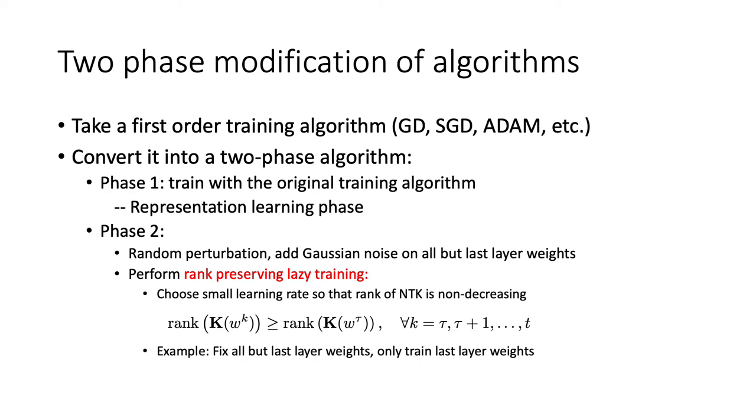Let's talk about the two-phase modification of the algorithm. Take your favorite first-order stochastic training algorithm, or even non-stochastic algorithm like gradient descent. You can convert it into a two-phase algorithm where phase one, you do exactly what you did before. You do representation learning. Let's say originally you have SGD with 100 epochs. Now you cut the 100 epochs into 60 epochs and 40 epochs, where you do the first phase in the first 60 epochs, and then you go to the second phase.